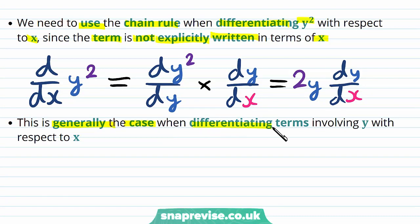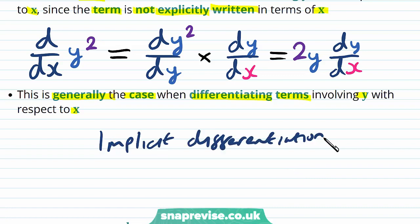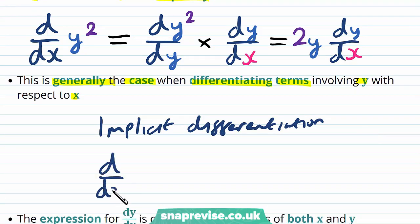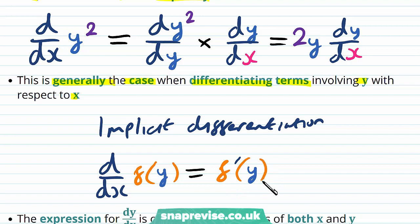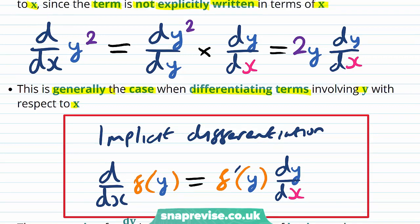This is generally the case when differentiating terms involving y with respect to x. Whenever we do implicit differentiation, if we need to differentiate a general function of y, then by the chain rule this equals f′(y) · dy/dx — that is, differentiate the function with respect to y, then multiply by dy/dx. This rule applies because we often differentiate functions of y with respect to x.